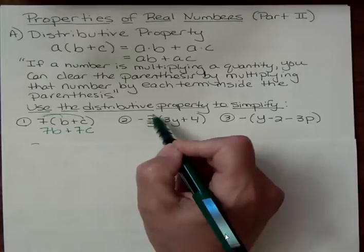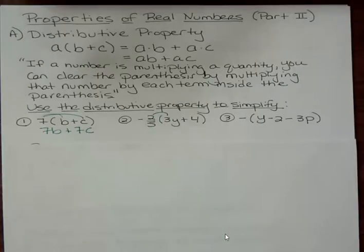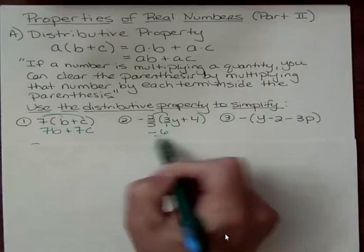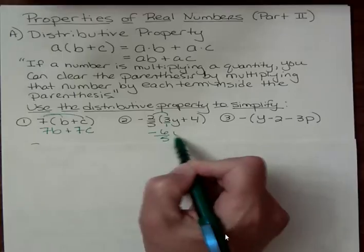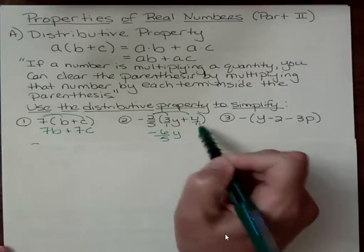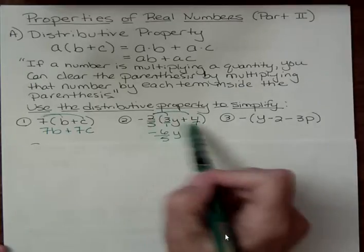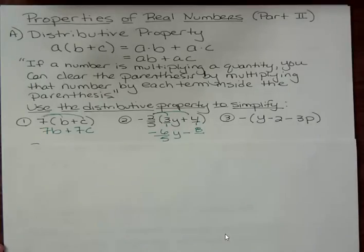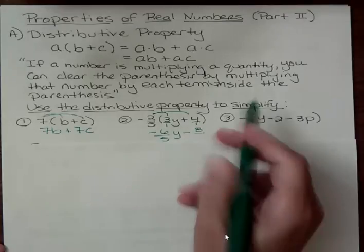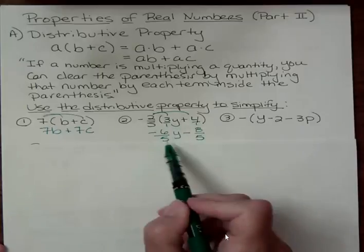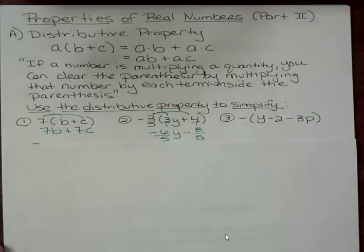In this next one, I'm going to multiply negative 2 fifths times 3. Think of that as 3 over 1. Negative 2 times 3 is negative 6, and 5 times 1 is 5, and I have a y there. And then I'm going to multiply this like 4 times 1. So on the top, I have negative 2 times 4, which is negative 8. I'm going to write that as subtract 8. And 5 times 1 on the bottom is 5. So now I have distributed that negative 2 fifths through there, so now they have a common factor of negative 2 fifths in there.